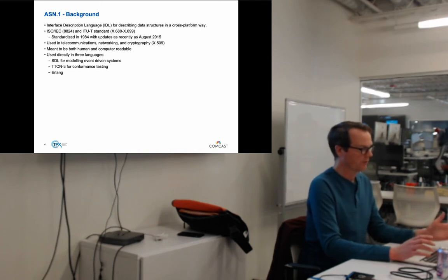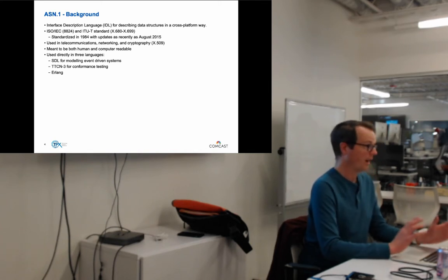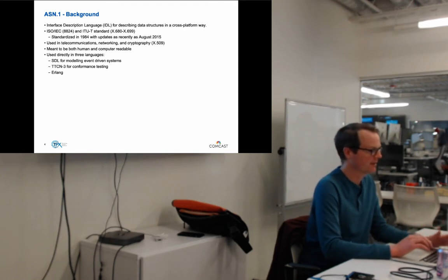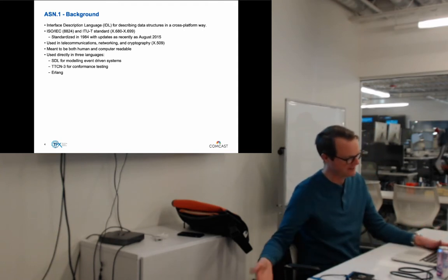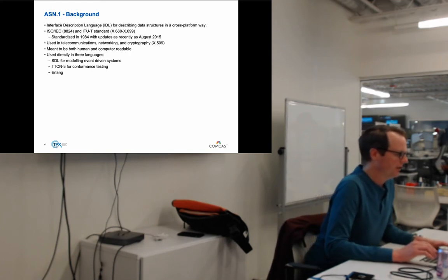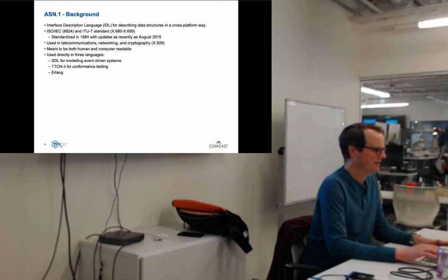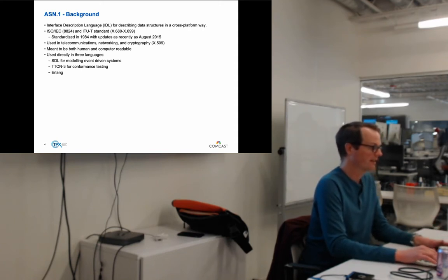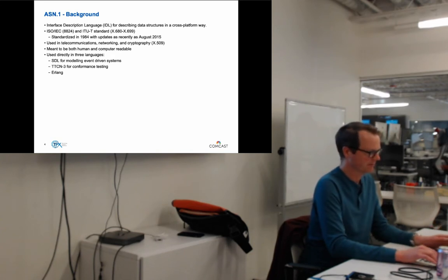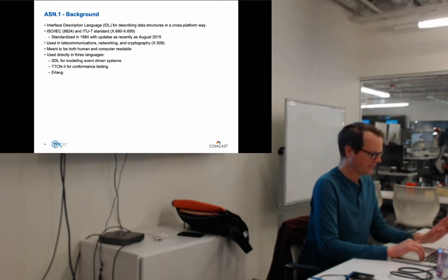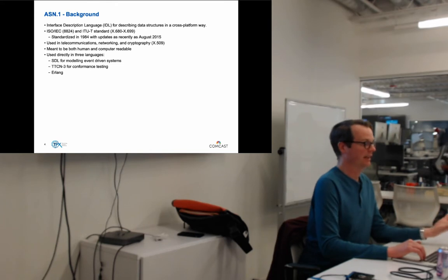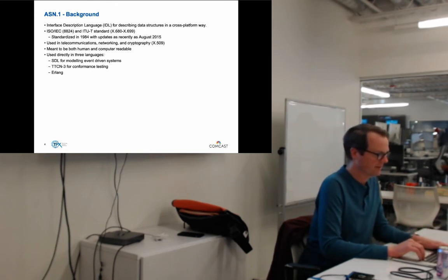So if you use LDAP, Voice over IP, SNMP, a cell phone, Wi-Fi, or HTTPS, then you use ASN.1 — many layers deep, but it's there. ASN.1 is a first-class structure in SDL, TTCN3, and Erlang. In Erlang you can actually write ASN.1 natively and it's first class — that's kind of neat.